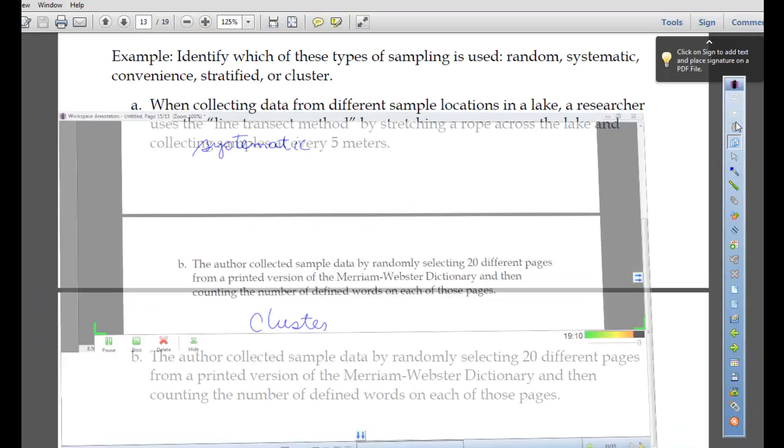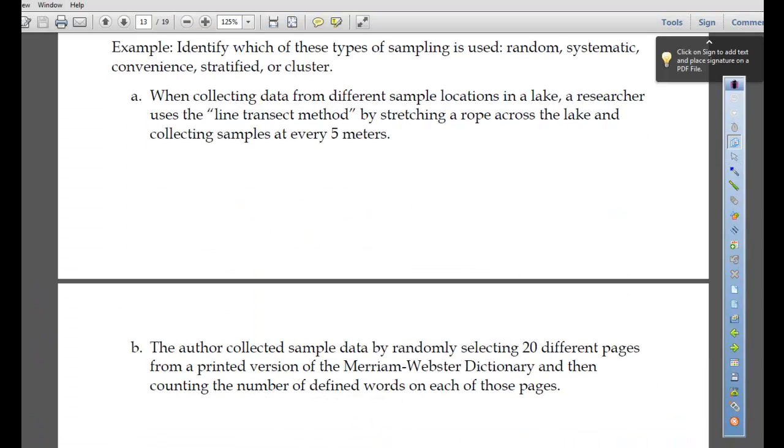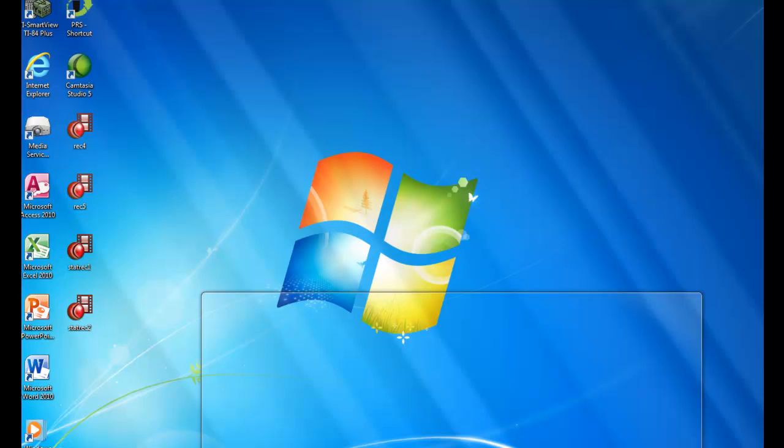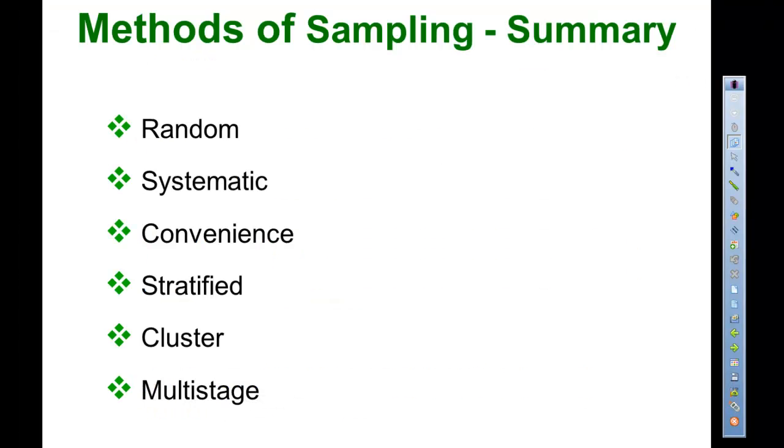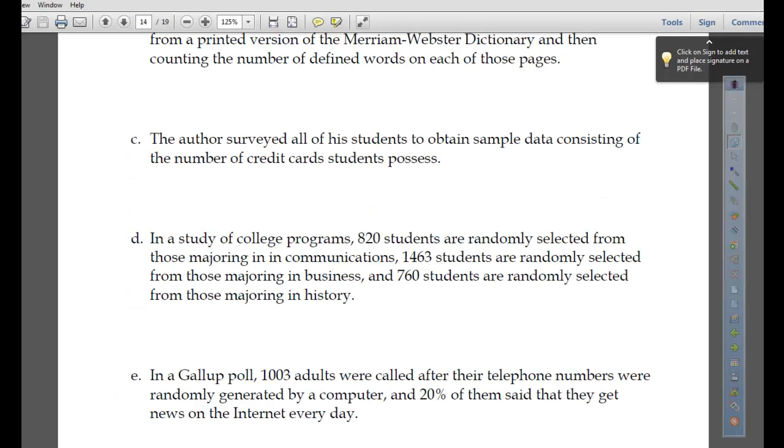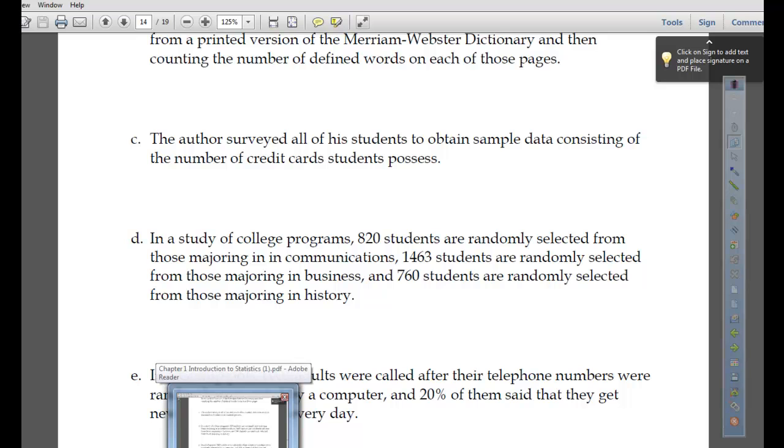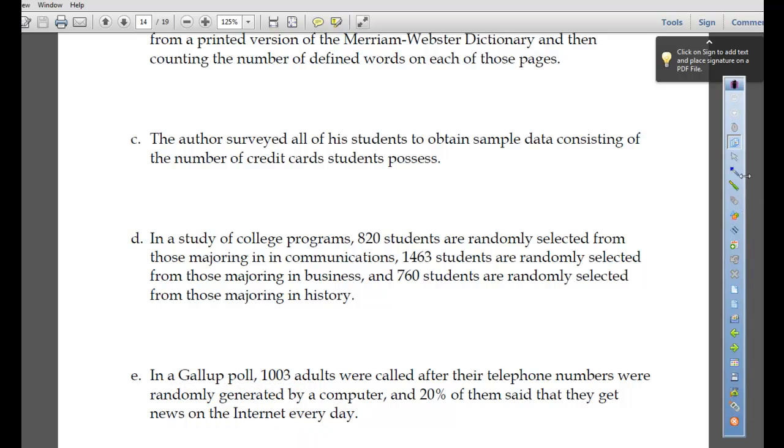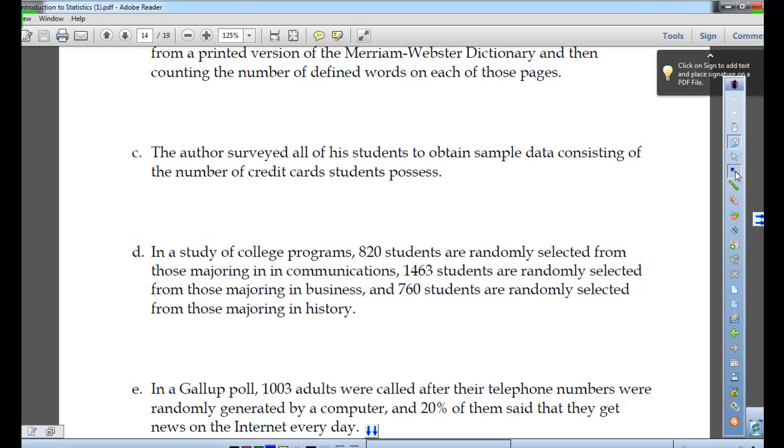The author surveyed all of his students to obtain sample data consisting of the number of credit cards students possess. What would we say about that? Sounds like convenience. That's what he has readily available would be his students. So convenience.